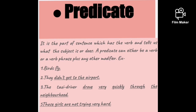'The birds fly' — what do the birds do? They fly, so fly is the predicate. Or consider 'They didn't get to the airport' — they is the subject and 'didn't get to the airport' is the predicate. Remember, the predicate includes the verb and the rest part of the sentence.